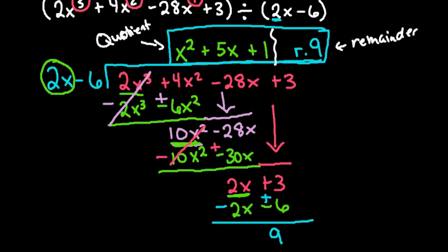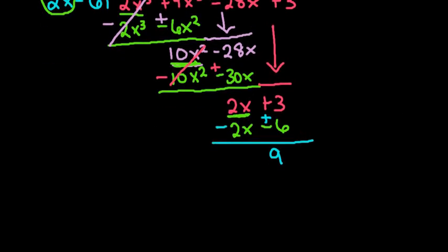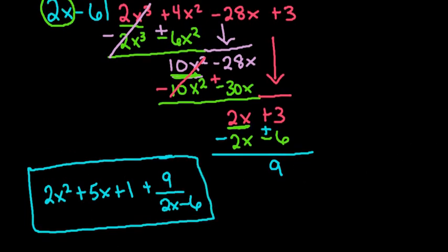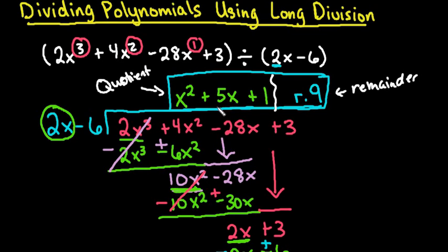Sometimes you are required to write it in terms of what you divided by with a fraction for the remainder. So another acceptable format of writing this answer would be x squared plus 5x plus 1 plus 9 over 2x minus 6. So we just write the remainder as a rational expression. And so you can either write it this way or you can write it as a remainder of 9. As always, thanks for watching. If you have any questions, please let me know.